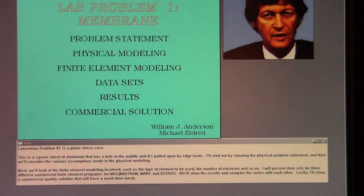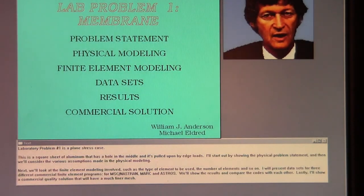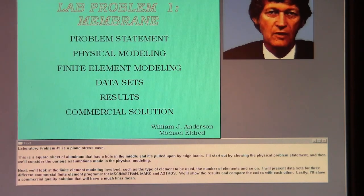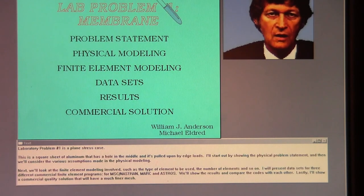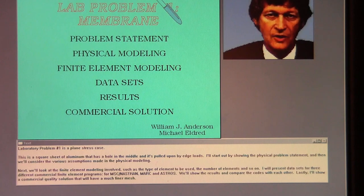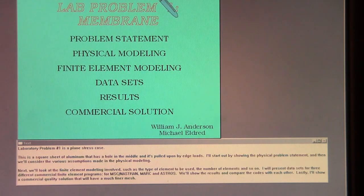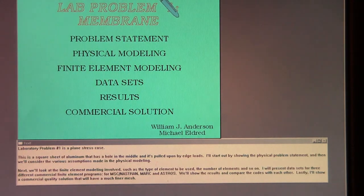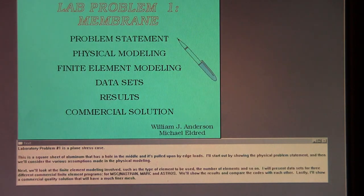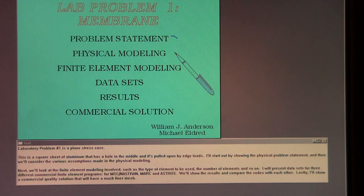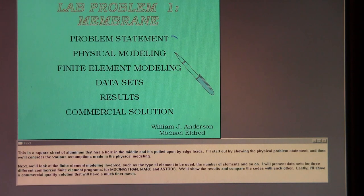Laboratory problem number one is a plain stress case. This is a square sheet of aluminum. It has a hole in the middle and it's pulled upon by edge loads. I'll start out by showing the physical problem statement and then we'll consider the various assumptions made in the physical modeling. Next we'll look at the finite element modeling involved, such as the type of element to be used, the number of elements, and so on.